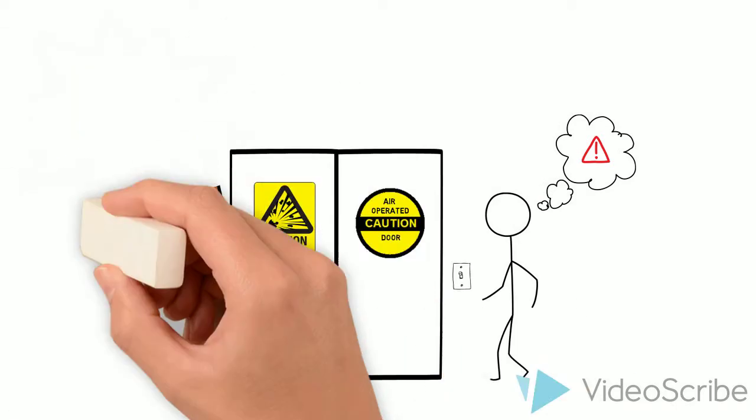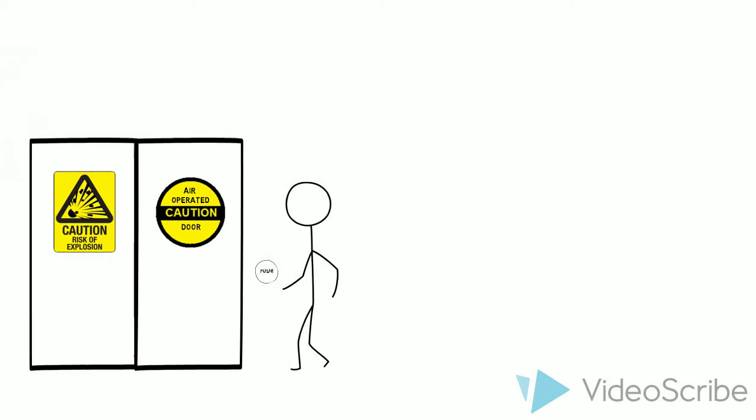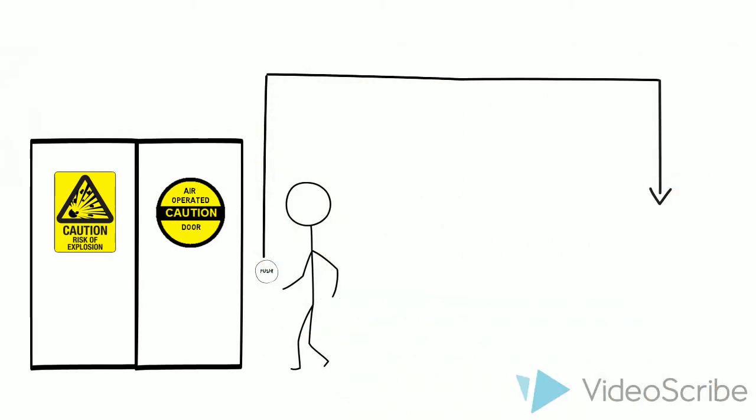So, let's go back to our original setup. But instead of opening the door with a switch, we'll use the bellow. Tubing would then run from the bellow to a switch location a safe distance away.